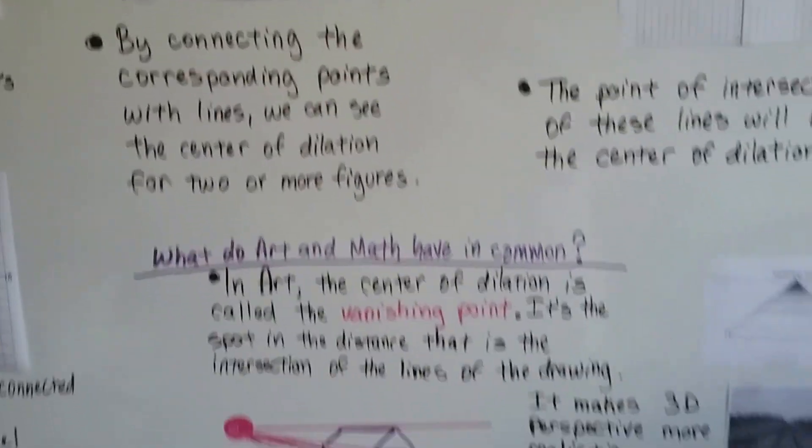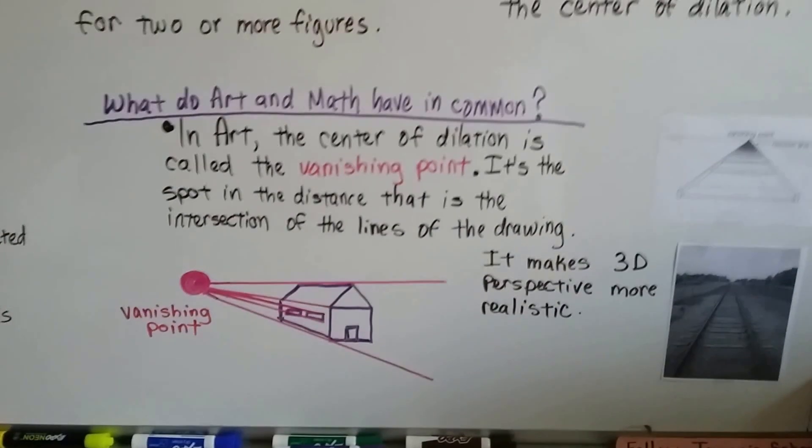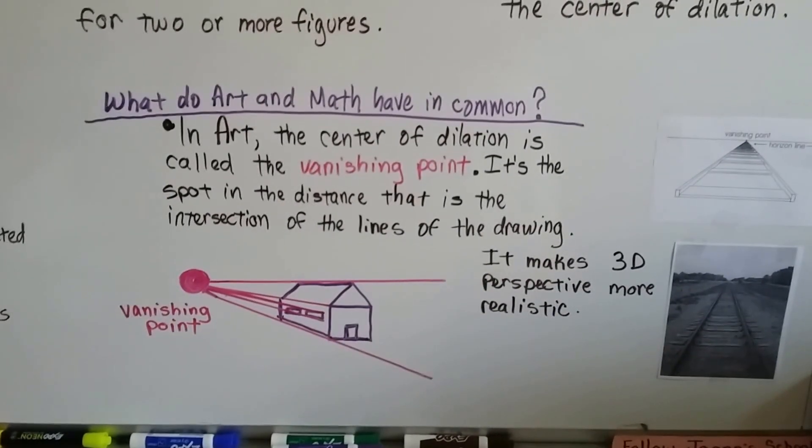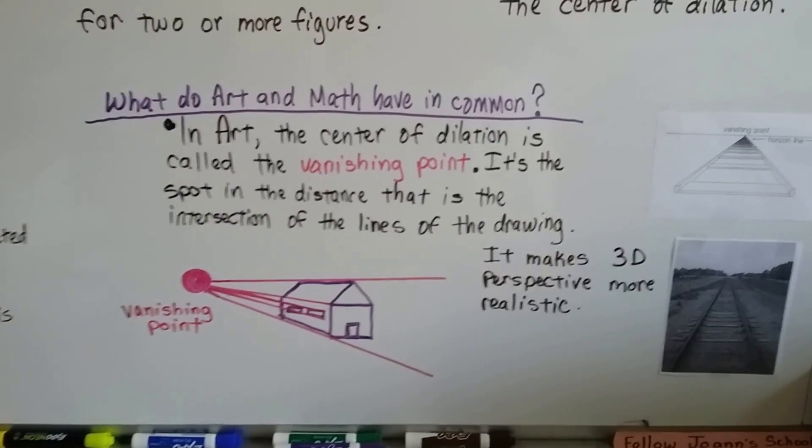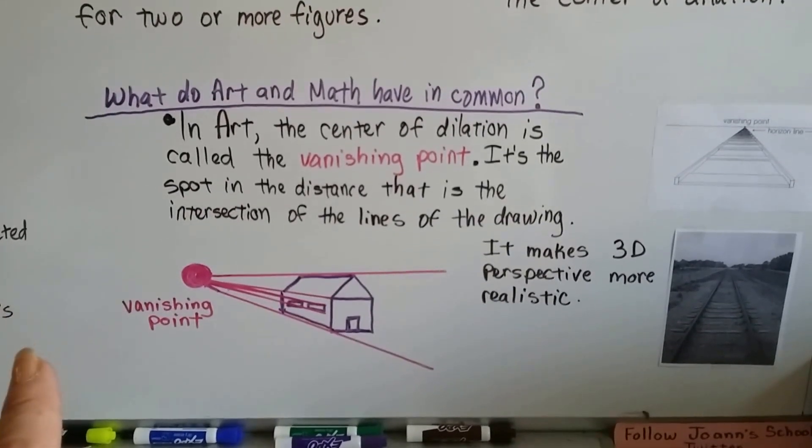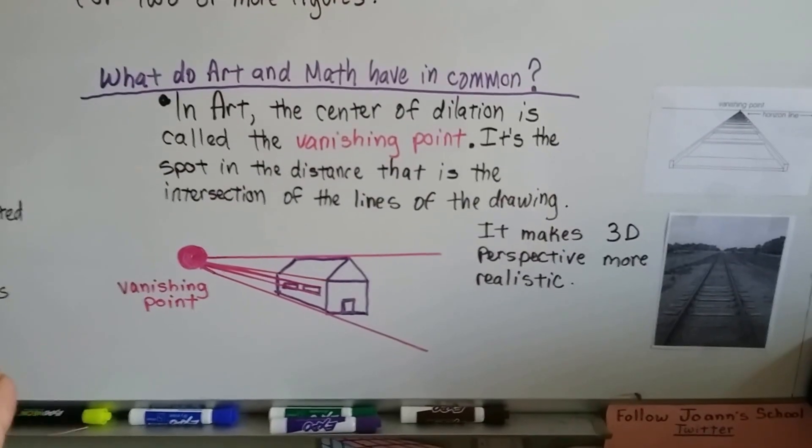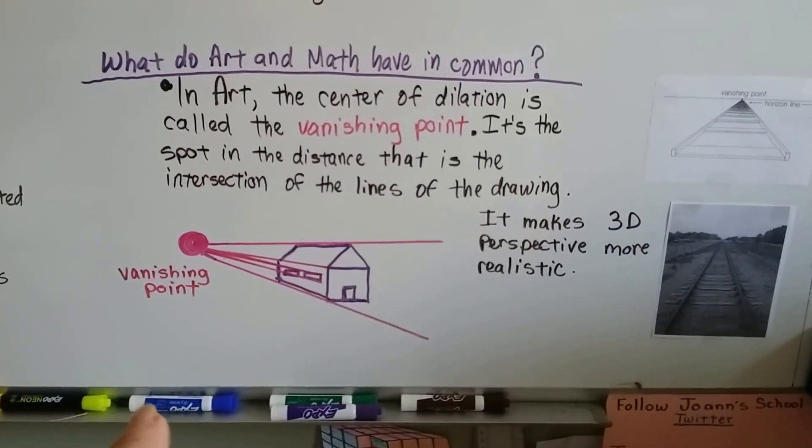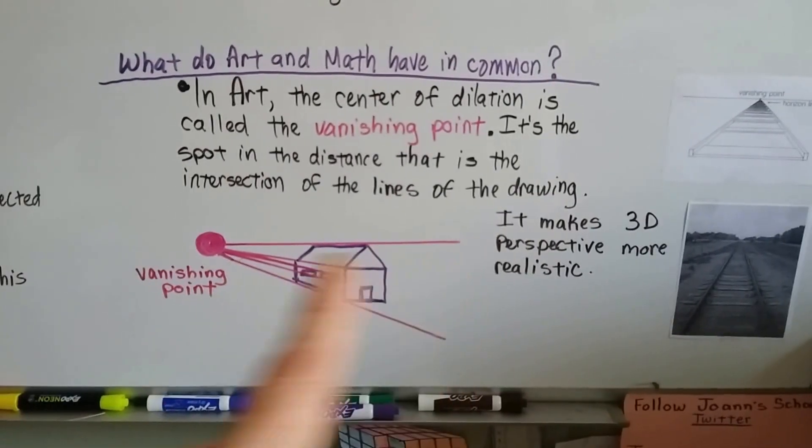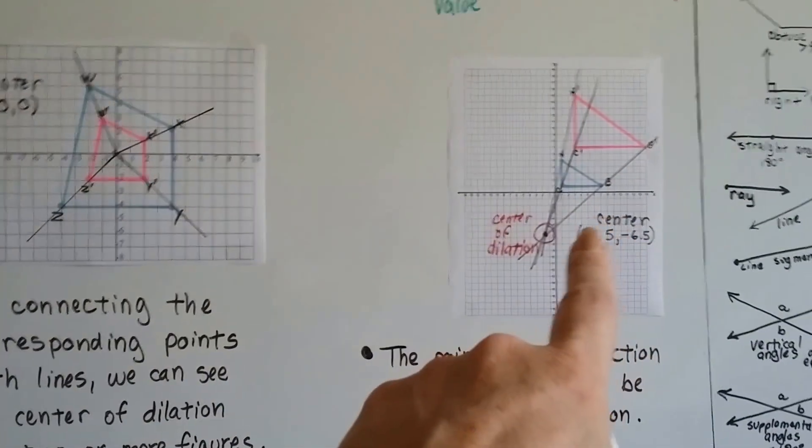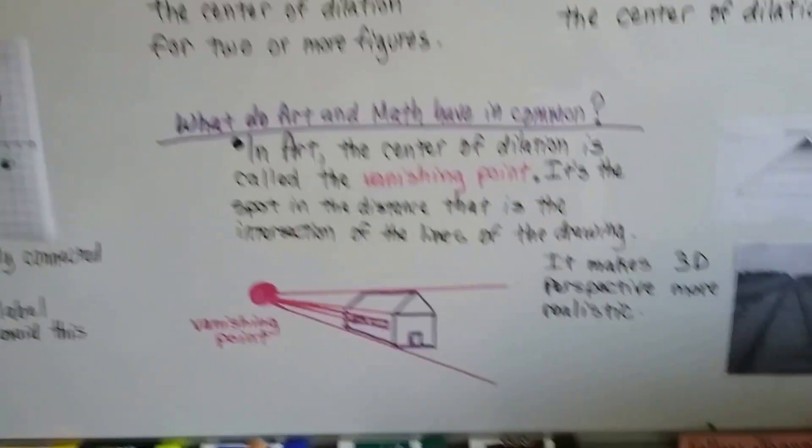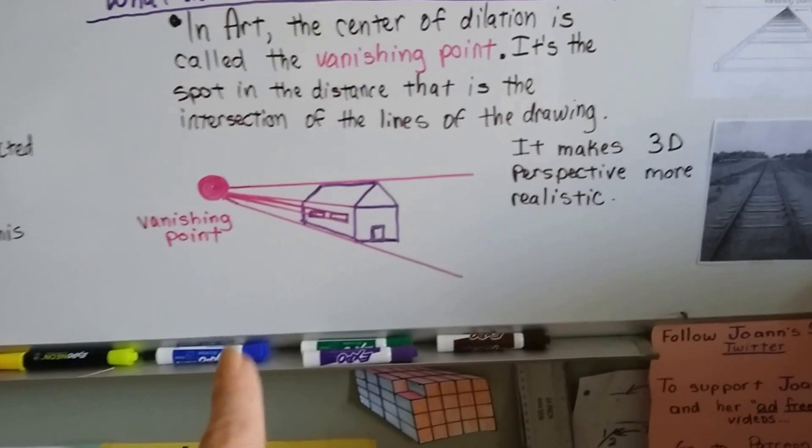What do art and math have in common? For those of you who love to draw and aren't really crazy about math, I got a surprise for you. They're very connected. There's a lot of math in art. In art, the center of dilation is called the vanishing point. It's the spot in the distance, the intersection of the lines of the drawing, just like the center of dilation. It's the same thing.